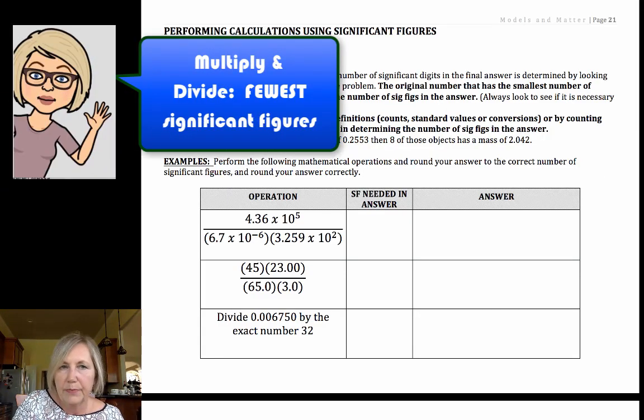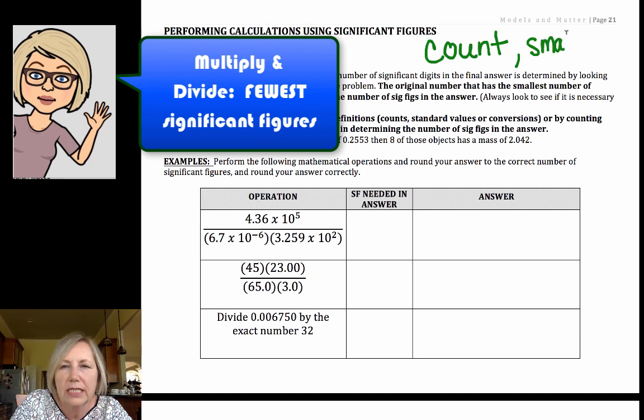Let's take a look at some examples in multiplication and division. What you want to do is count the number of significant figures in each value, and once you've done that, you want to round to the smallest value. In other words, our fewest significant figures will dictate what is the ethically responsible way to report our values.